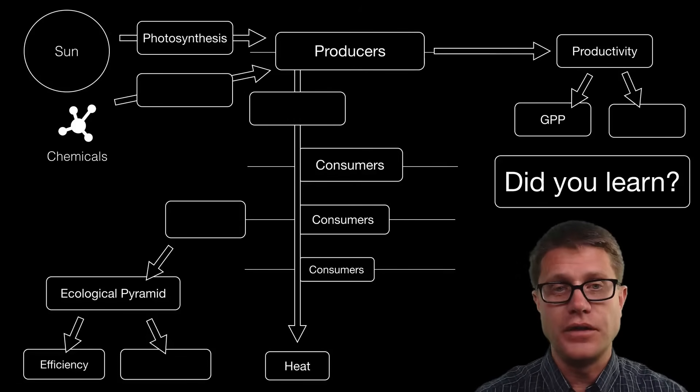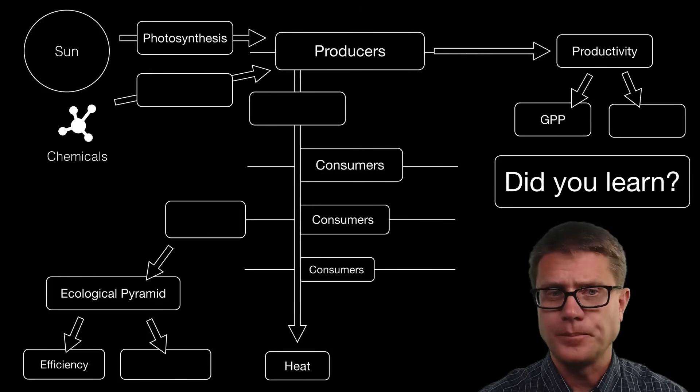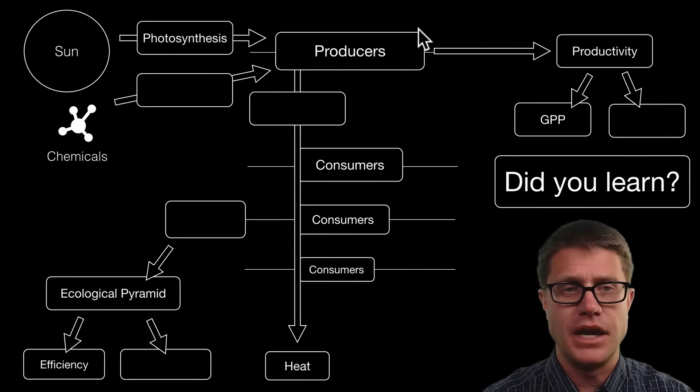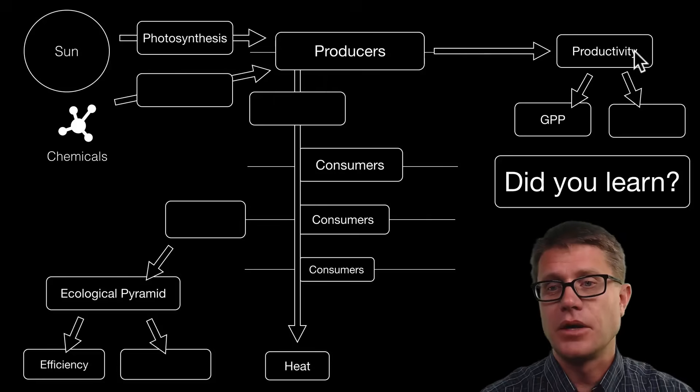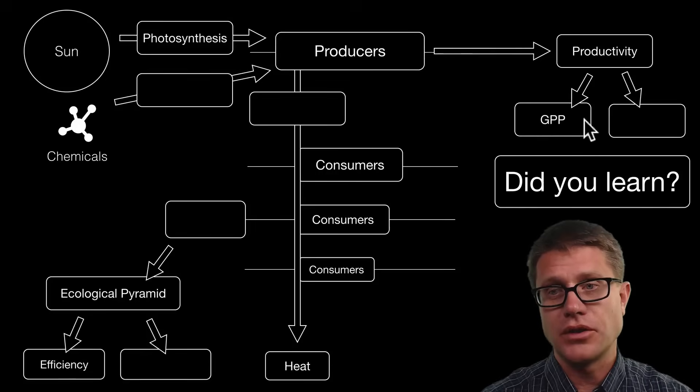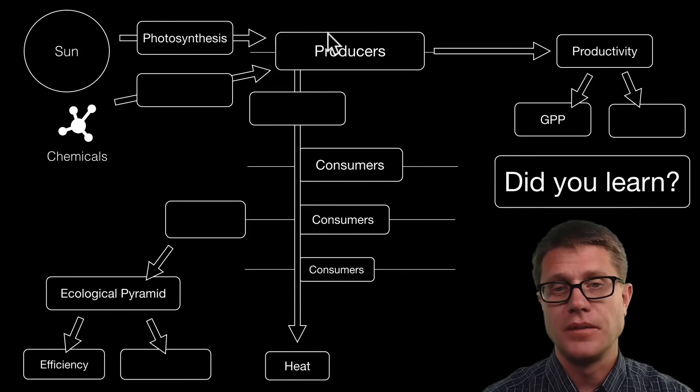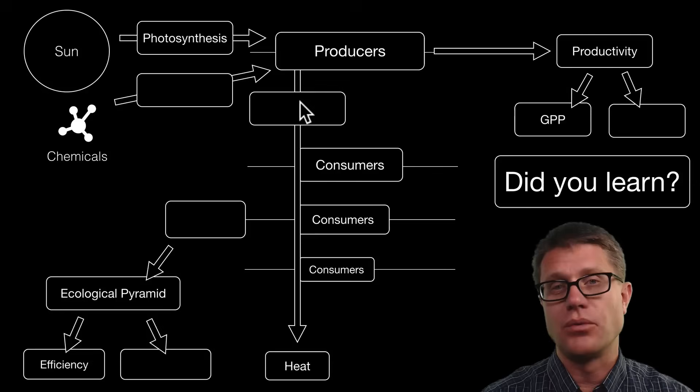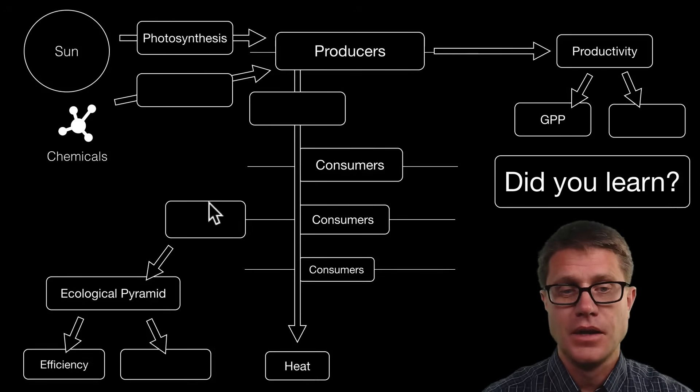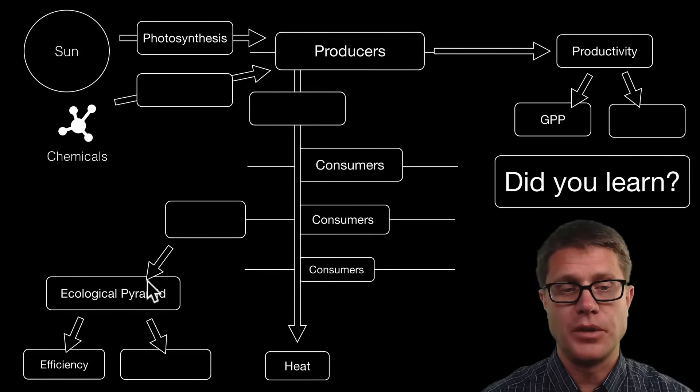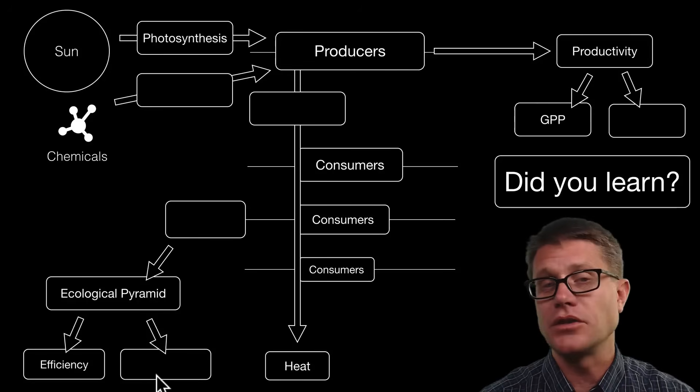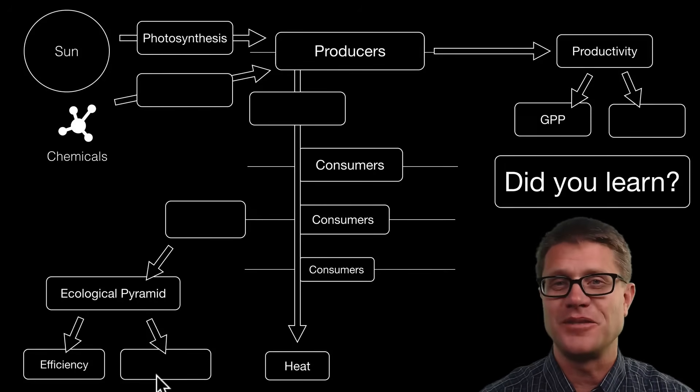And so did you learn the following? Can you fill in all the blanks? Pause the video. If not I would say that energy comes from chemicals through chemosynthesis to producers. We could measure productivity as gross or net primary productivity. How do we utilize that energy? This would be respiration all the way down to heat. We then have the trophic levels. Those are going to be the feeding levels. Ecological pyramids measure efficiency. And we can also measure the biomass. And I hope that was helpful.